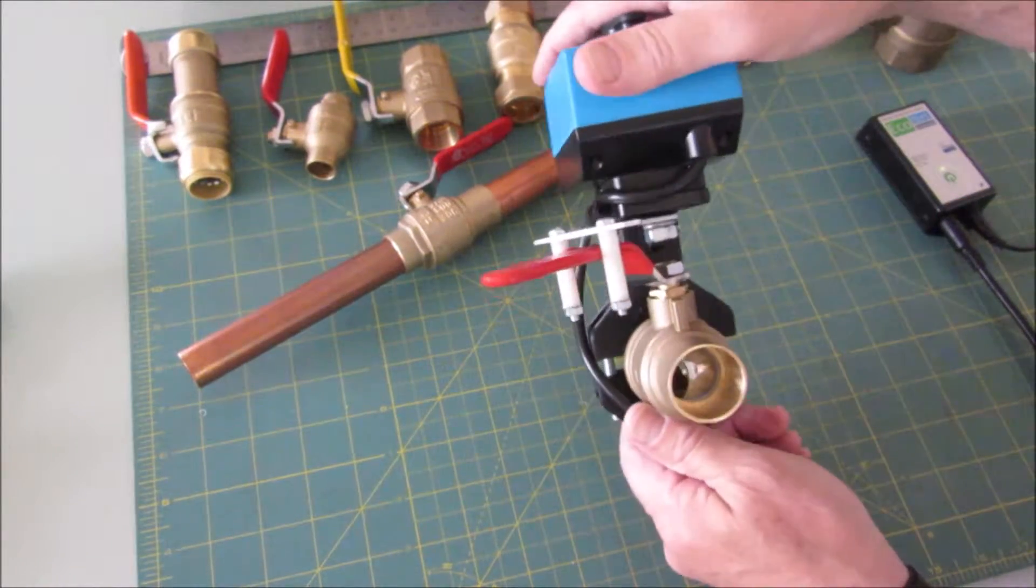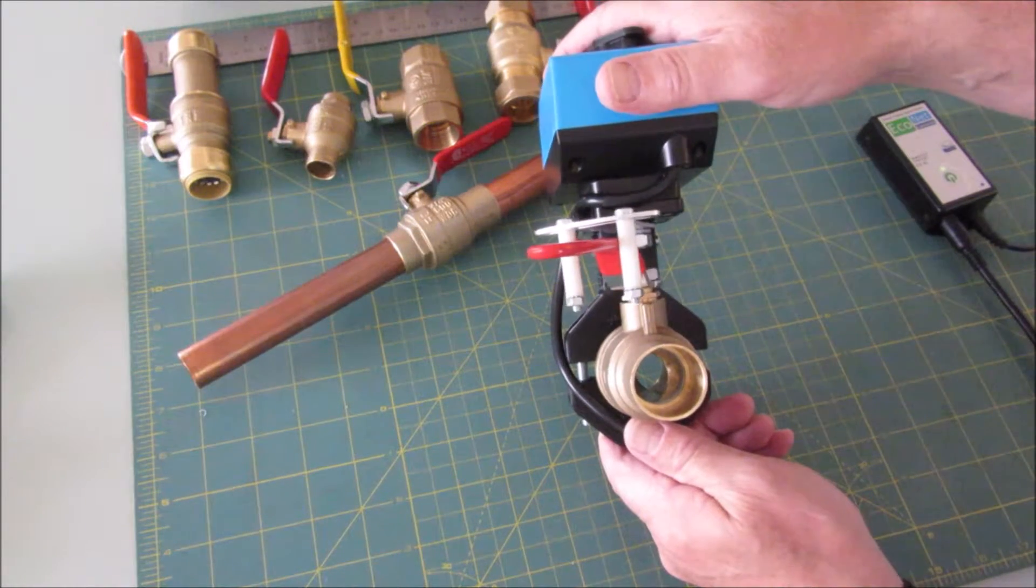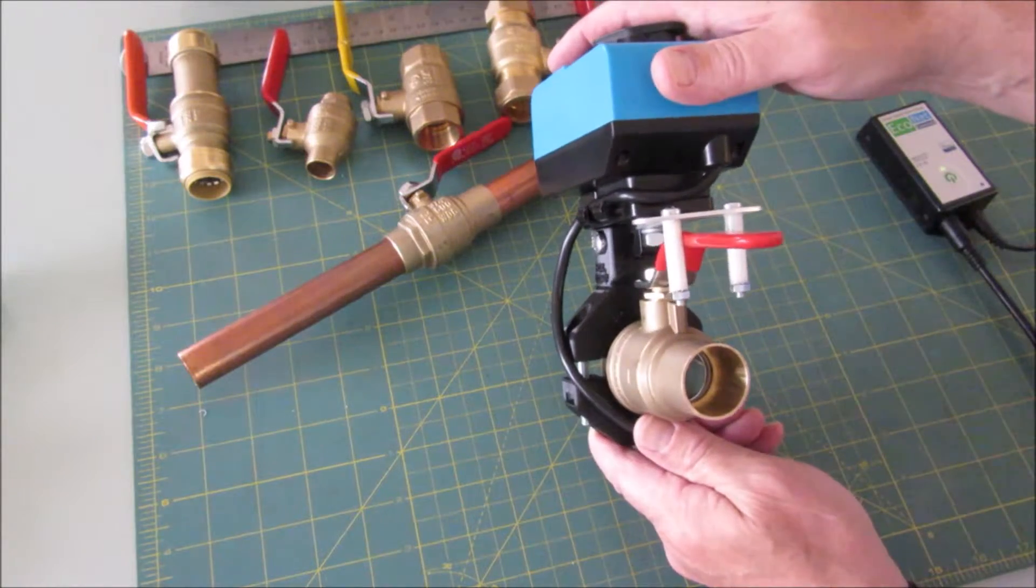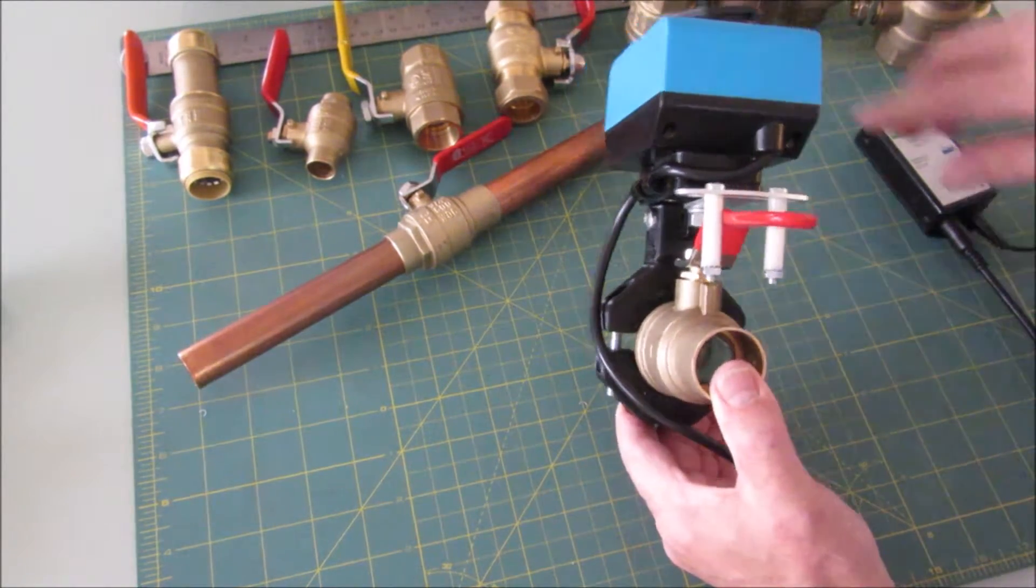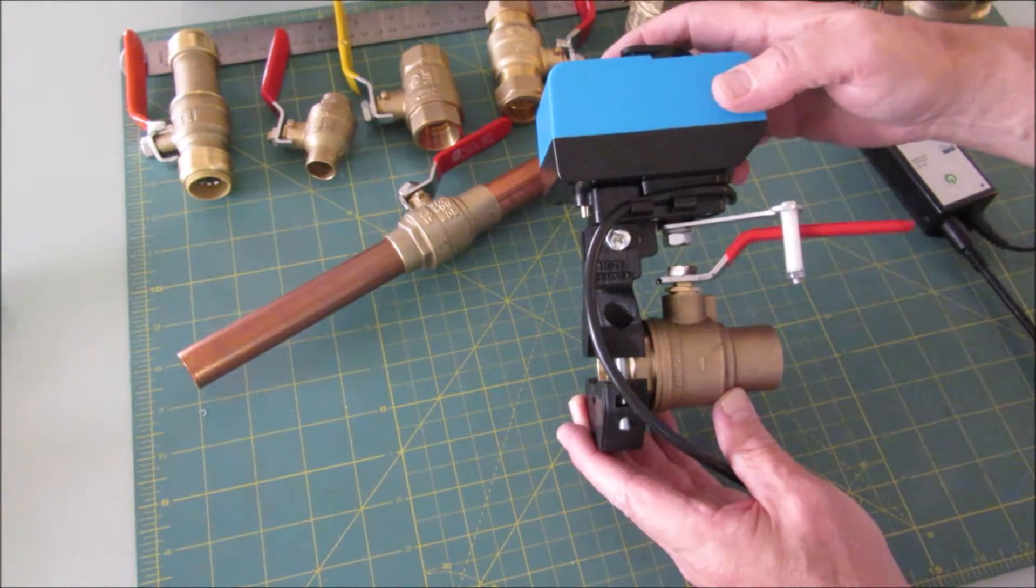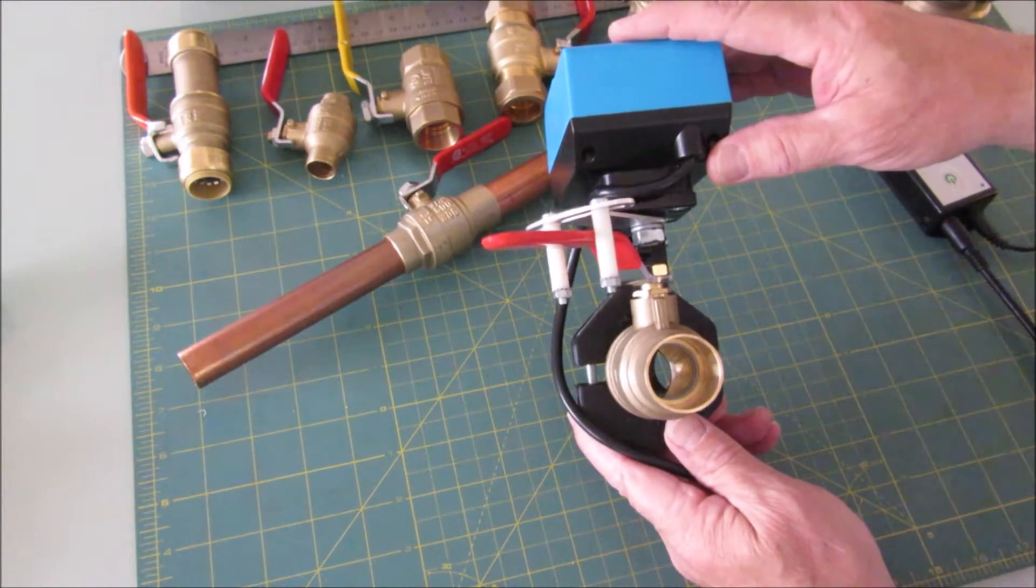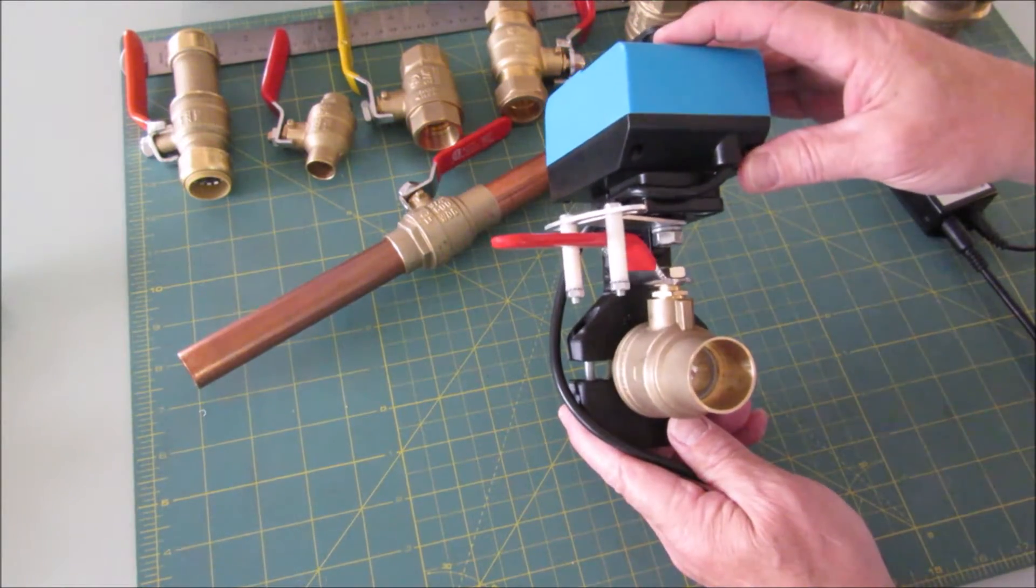You can see everything's even, centered, and it's got no problem turning this one inch solder type valve. You can see it opens all the way. Let's just watch the closed stroke one more time. I got the pins adjusted and it's closing all the way. And that's it.